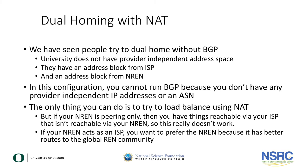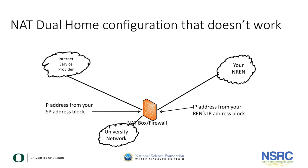We have seen some cases where people try to dual home a campus network without using BGP. They don't have any provider independent address space, so they use an address block from their ISP and one from the NREN. Since they don't have provider independent address space or an ASN, they can't run BGP. The only thing they can do is run NAT and try to load balance or use one connection as a backup for the other.